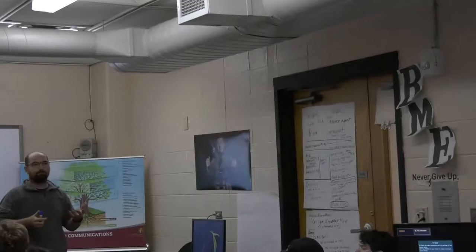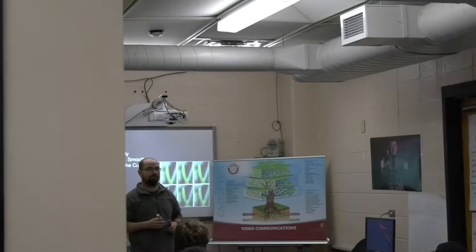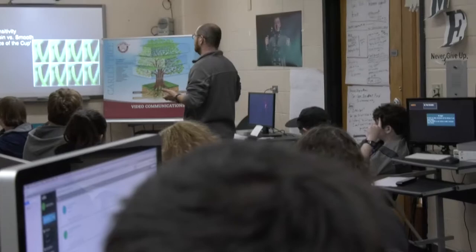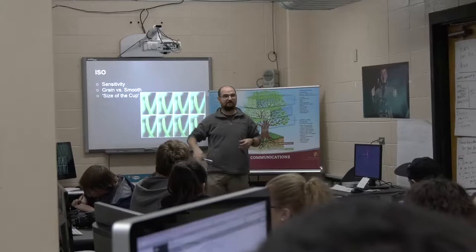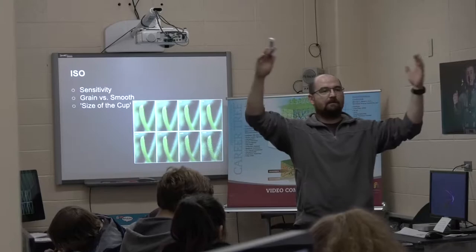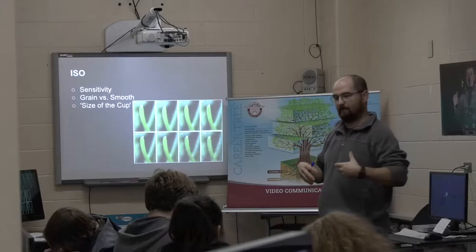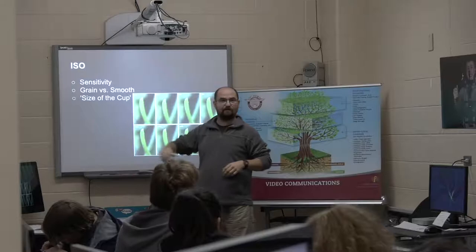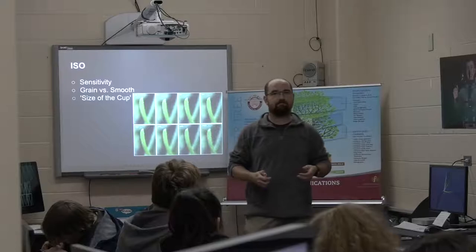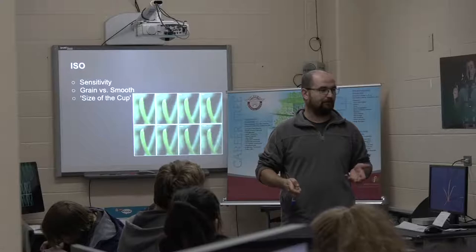A good ballpark for ISO — our low ISO numbers are 100 to 400, somewhere in that range. Those are going to be good for a bright sunny day, a great amount of light that gives us greater flexibility. But as we go into lower light situations, like in here, what do you guys think a good ISO would be? What would a starting point be?